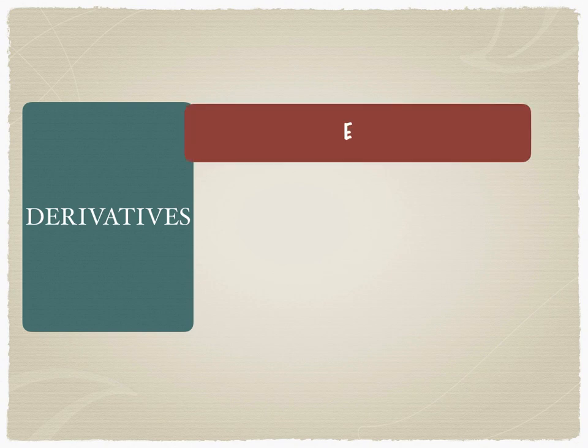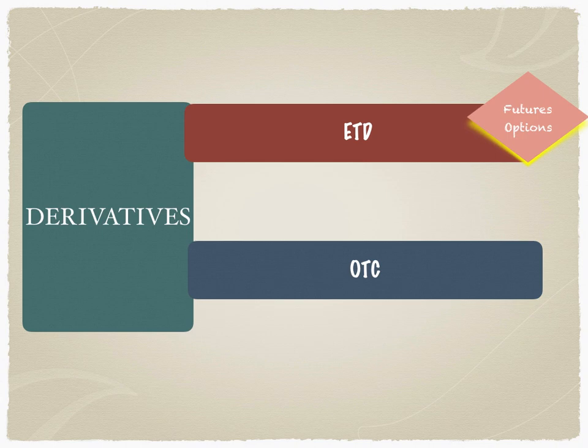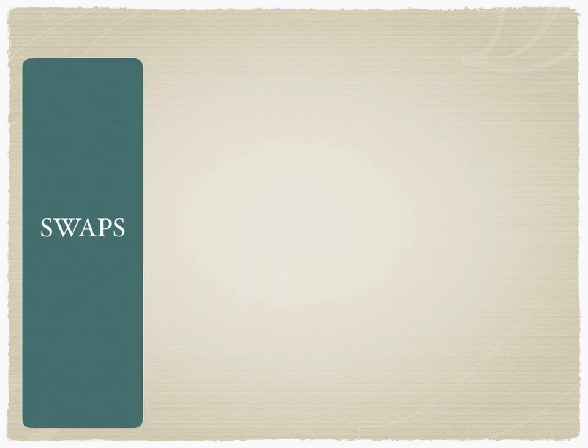Derivatives are of two types: exchange traded derivatives and OTC derivatives. Exchange traded derivatives, also called listed derivatives, could be futures and options which get traded on NYSE, NSE, BSE, etc. OTC derivatives, on the other hand, are extremely customized to meet the requirements of the two counterparties to the trade, and these could be swaps, forwards and so on.